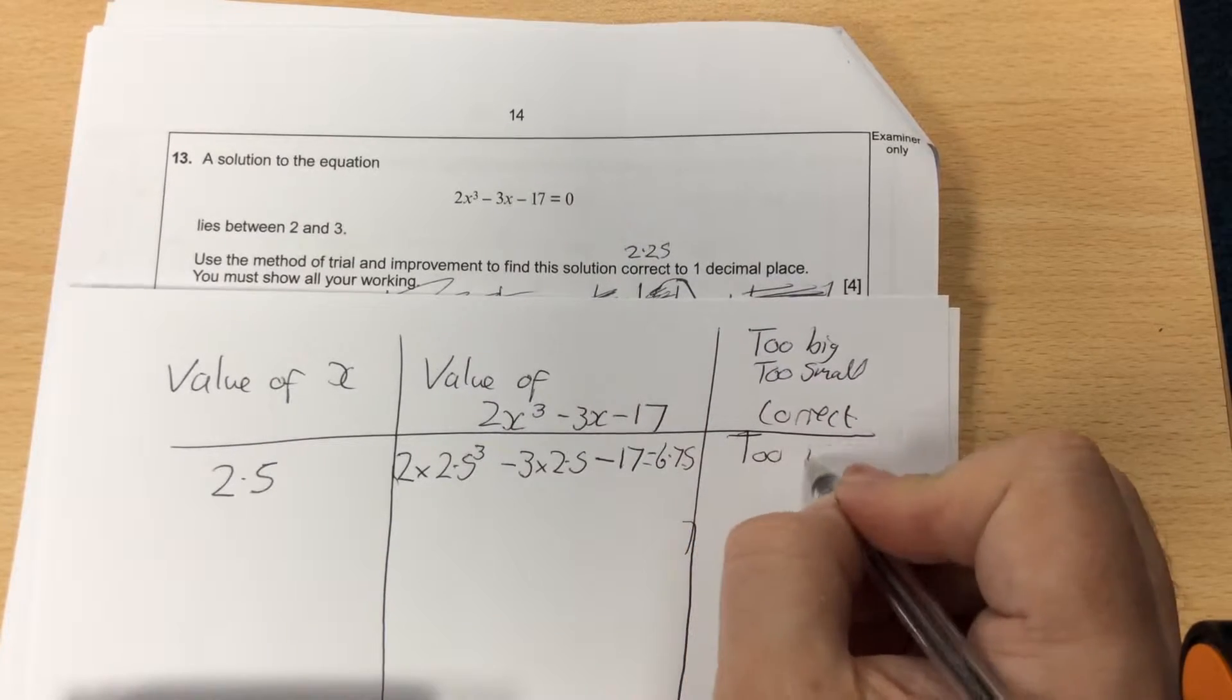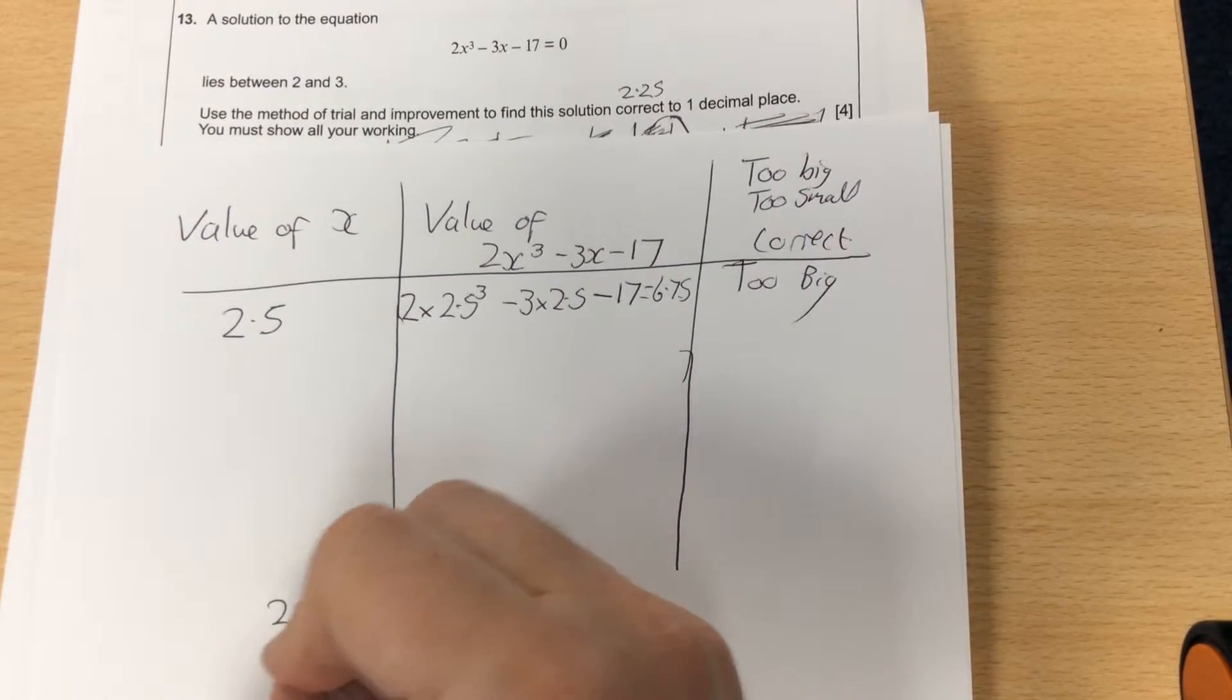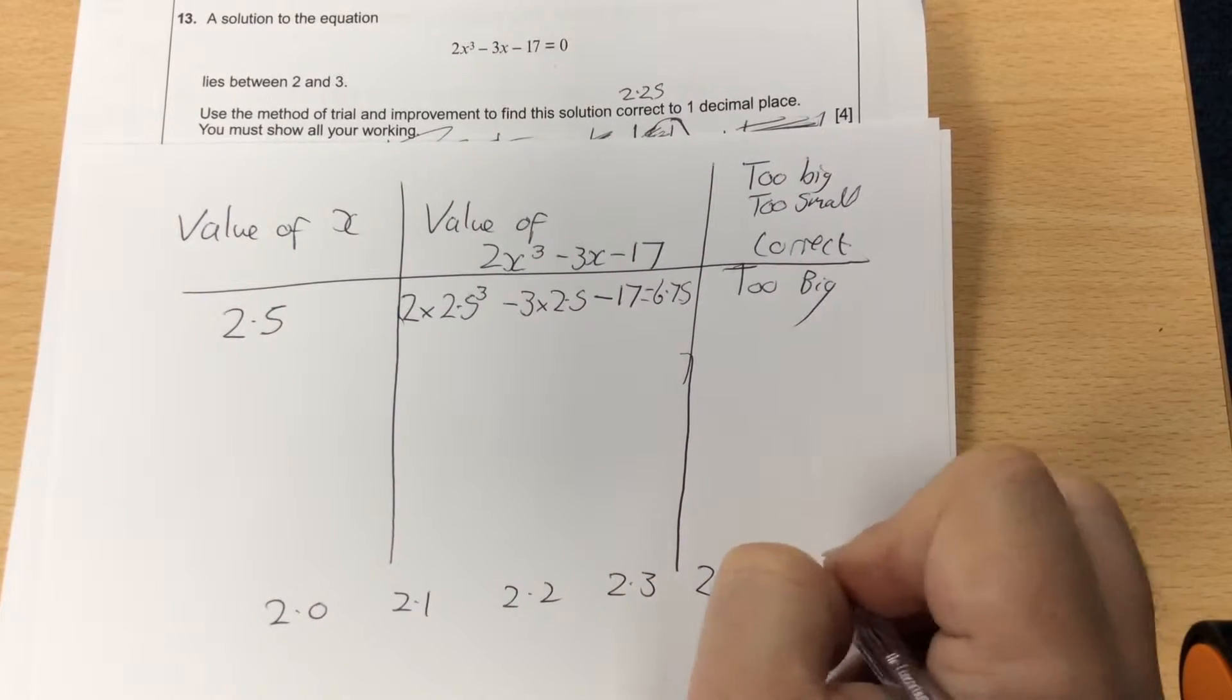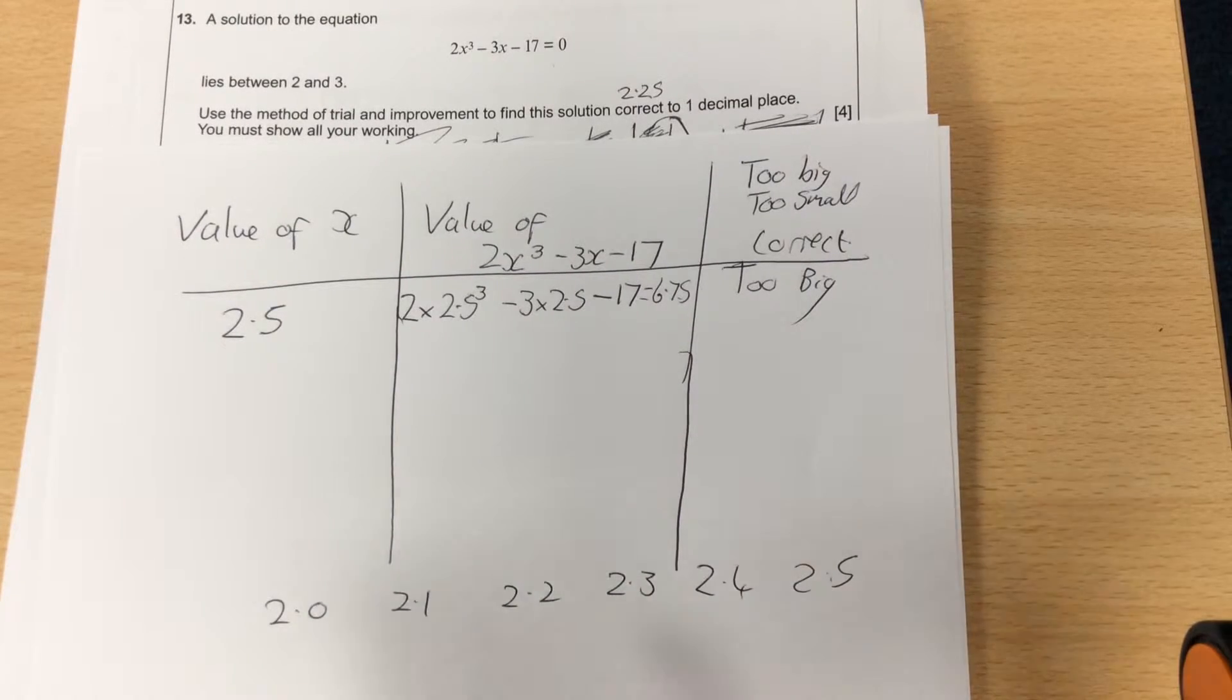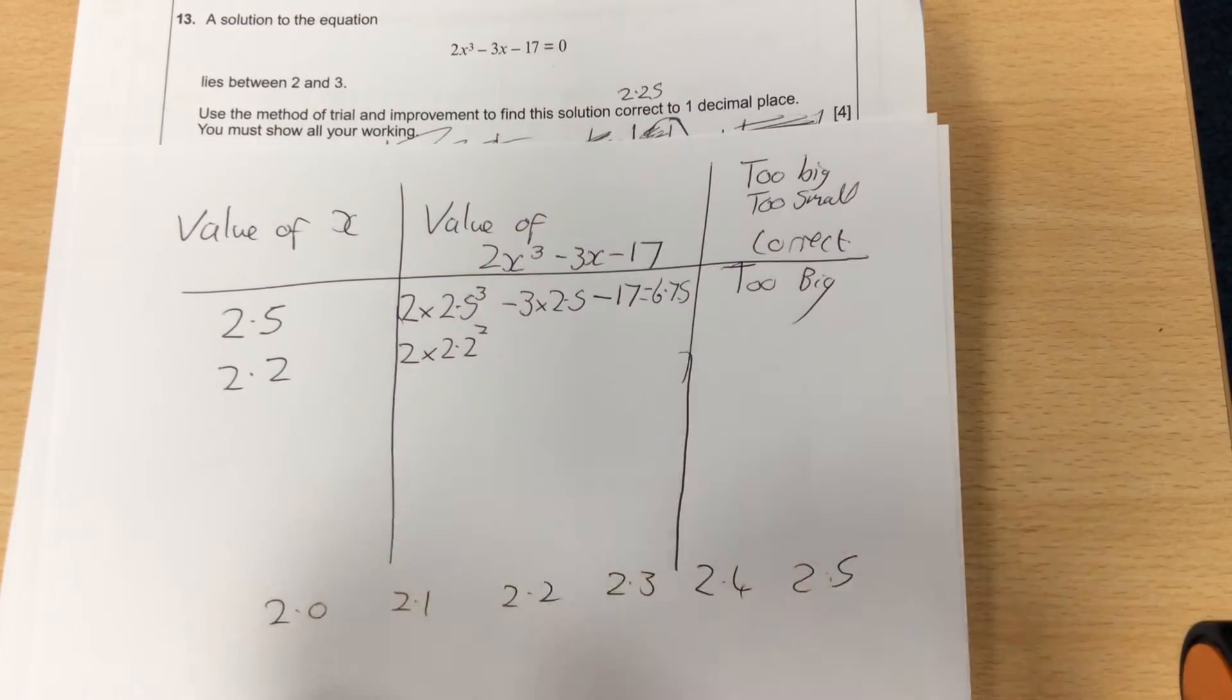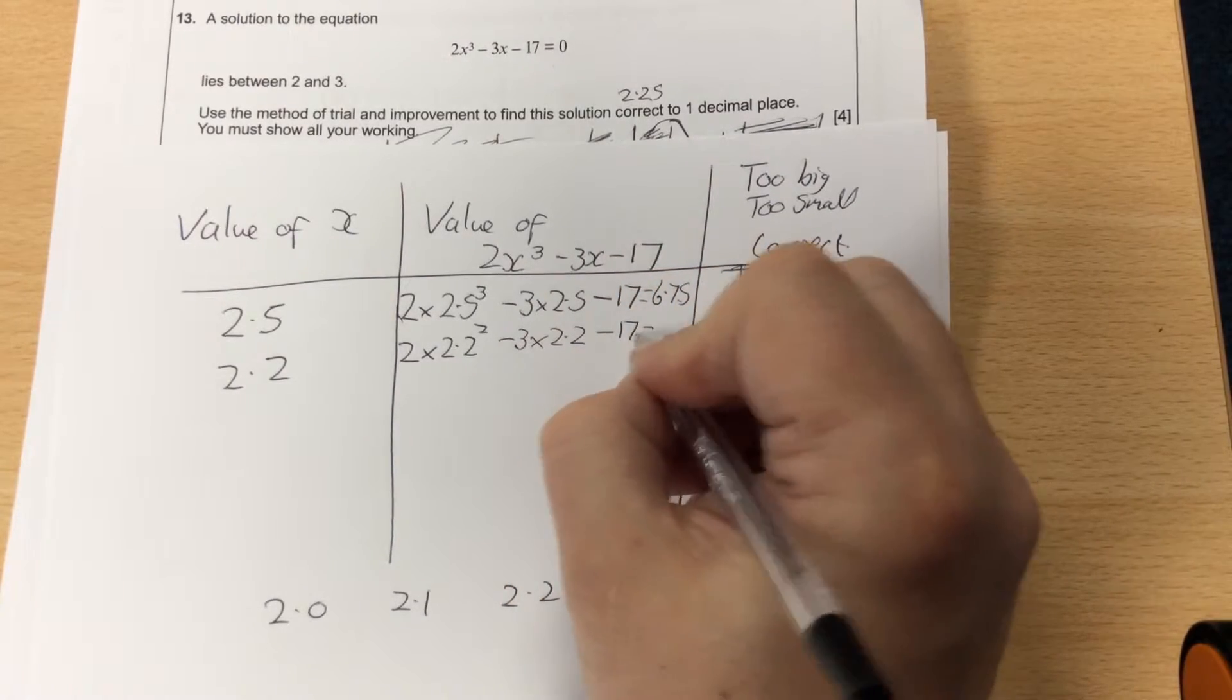Because that's too big, I need to try because I want it equal to 0. It means now that my answer is going to be between 2.0, 2.1, 2.2, 2.3, 2.4, or 2.5. So I'm going to try in the middle of 2 and 2.5, because I know it's between there, and I'm going to go for 2.2. So I'm replacing the 2.5 with 2.2, so it becomes 2 times 2.2³ - 3 times 2.2 - 17.